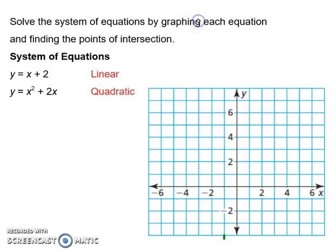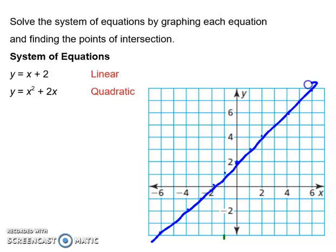I'm going to do that in blue because it's x plus two. We have y is equal to x plus two. I know that my y-intercept is two, and I can just graph it because it has a slope of one. I go up one over one, or down one left one, and I'm just going to have a rough line.